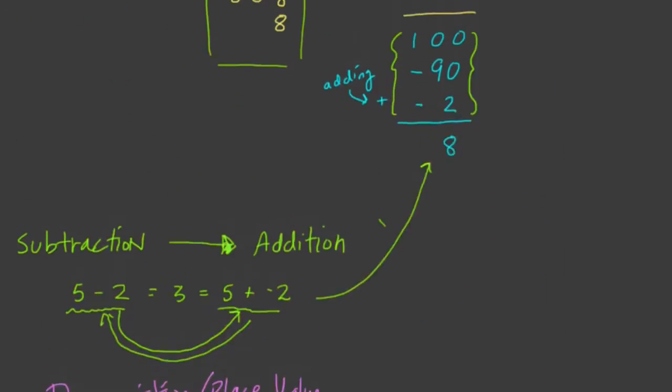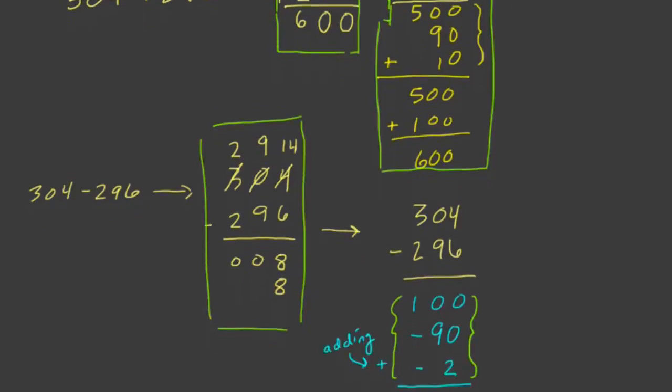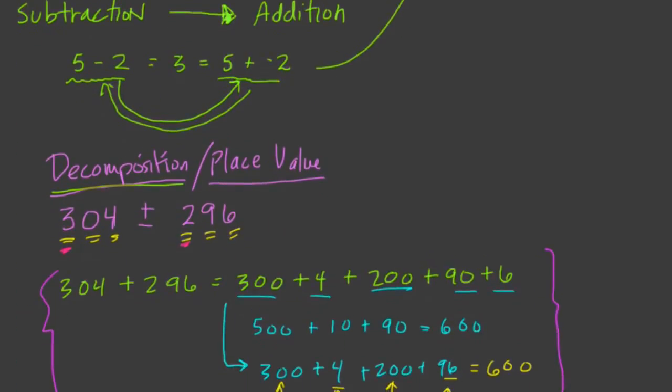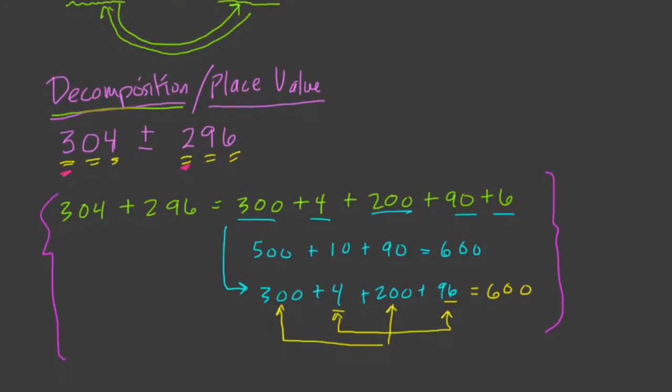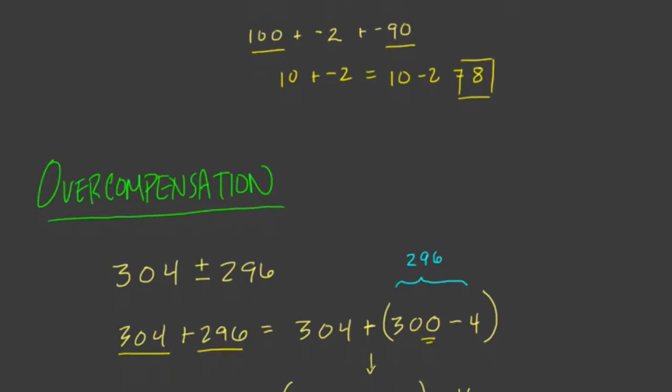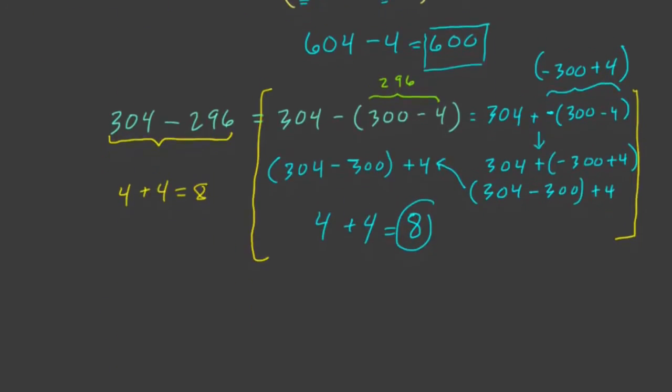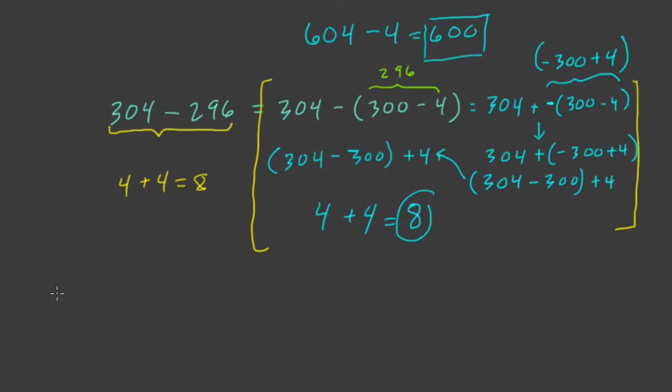We cover some variation of the stack method, which works best I think, the correlation between subtraction and addition, the idea that you can go back and forth between them, the decomposition place value method, the overcompensation method, and finally here, what I'm going to call the give and take method.